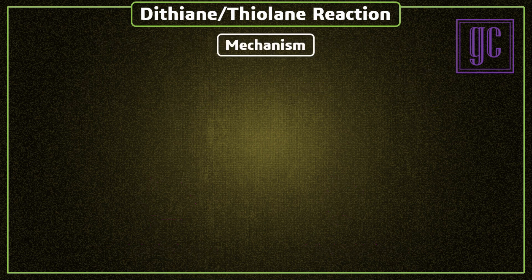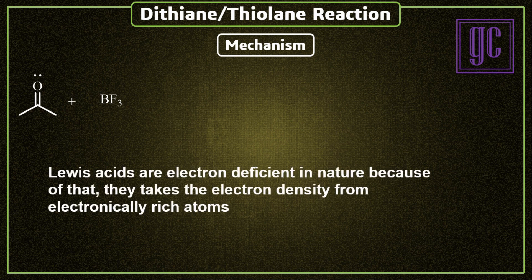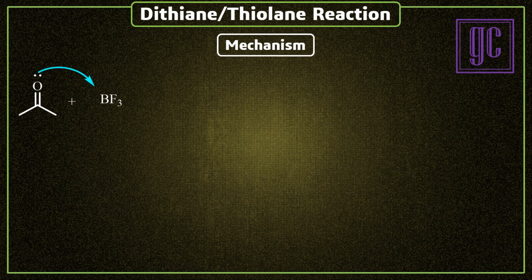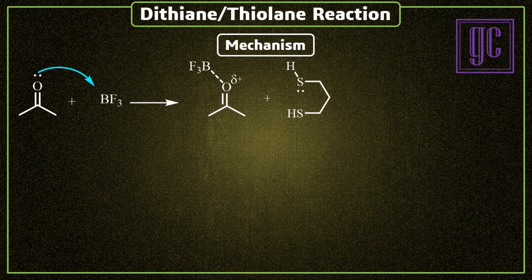Now we are going to discuss the mechanism of this reaction. The carbonyl group interacts with a Lewis acid. The most commonly used Lewis acid is trifluoroborane. Lewis acids are electron-deficient in nature; because of that, they take electron density from electron-rich atoms or groups. The Lewis acid interacts with the oxygen of the carbonyl, and as a result, a partial positive charge is generated on the oxygen atom. Because of this, the bonding electrons of the carbonyl are more shifted to the oxygen atom. As a result, the partial positive charge is increased on the carbonyl carbon, and because of that, it favors nucleophilic attack more.